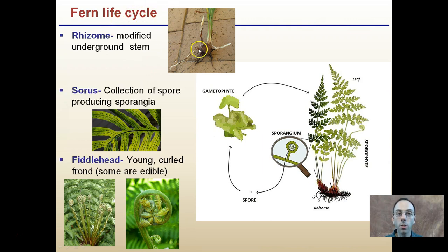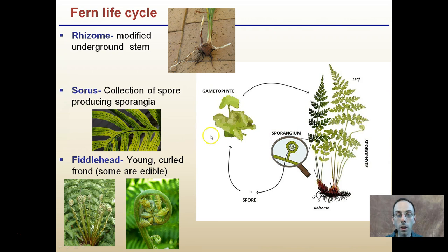The diploid organism will then produce the sporophyte. Lastly in the fern life cycle, there is a rhizome, which is a modified underground stem. The sori, as I mentioned, are a collection of spore-producing sporangia — they're the little dots on the underside of the leaf. If you've ever looked at a frond of a fern, you may see some little dots underneath; that's the sporangium, and it's going to produce the spores that ultimately will boost the gametophytes that produce the next generation.